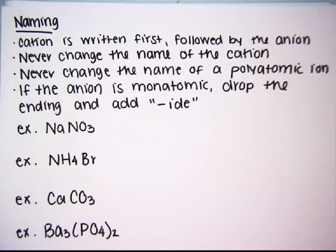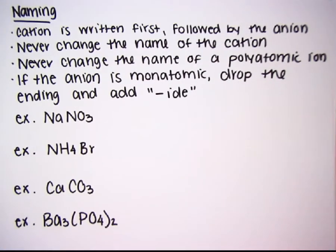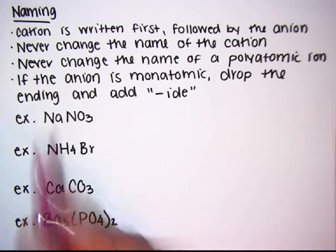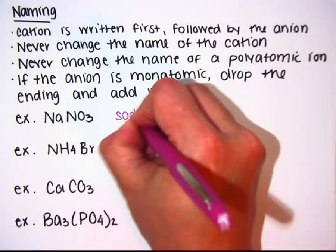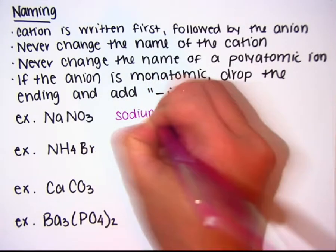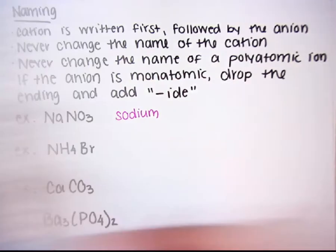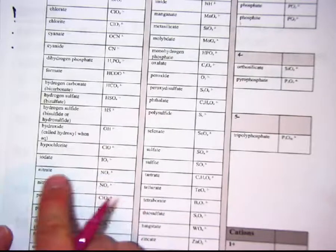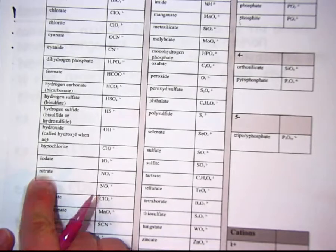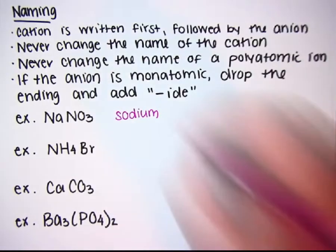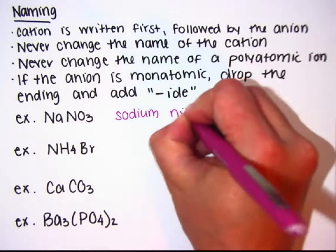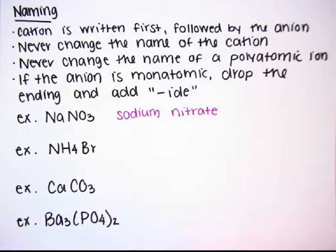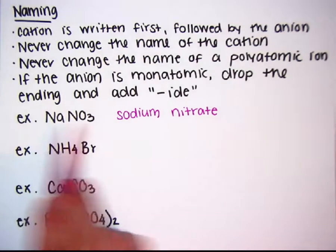These ones are a little easier to name because only one of them requires adding any letters. First example: Na is sodium — cation comes first, never change the name of the cation. NO3 is nitrate — it's polyatomic, so never change the name of a polyatomic ion; copy it exactly as you see it on the reference sheet. This is sodium nitrate.